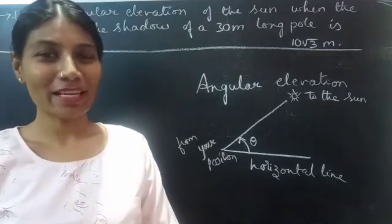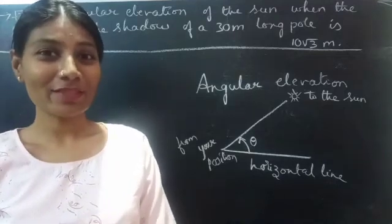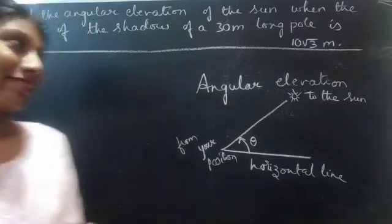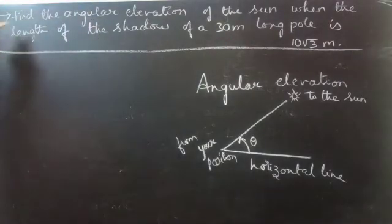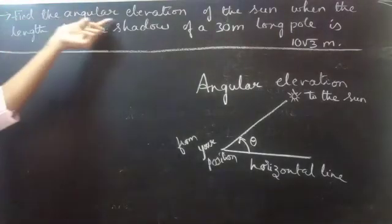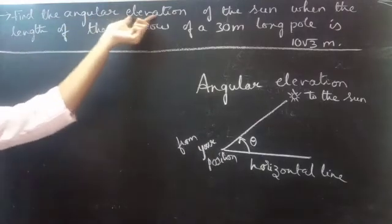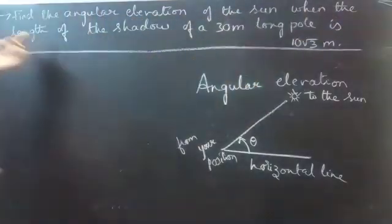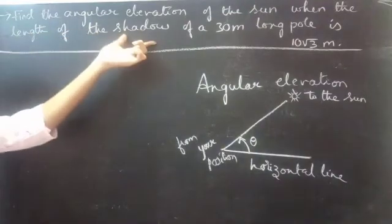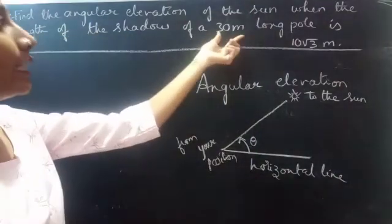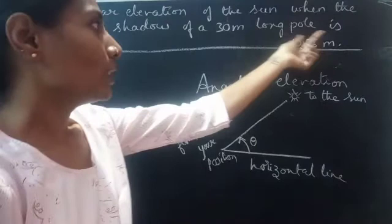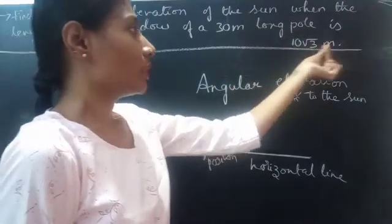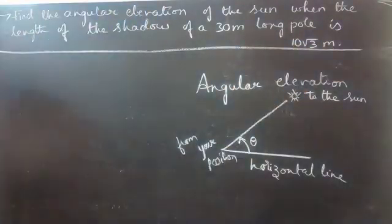Hello everyone, this is Vikalpana here. In this video we are going to see a problem from heights and distance. Here is the question: Find the angular elevation of the sun when the length of the shadow of a 30 meter long pole is 10 root 3 meter.